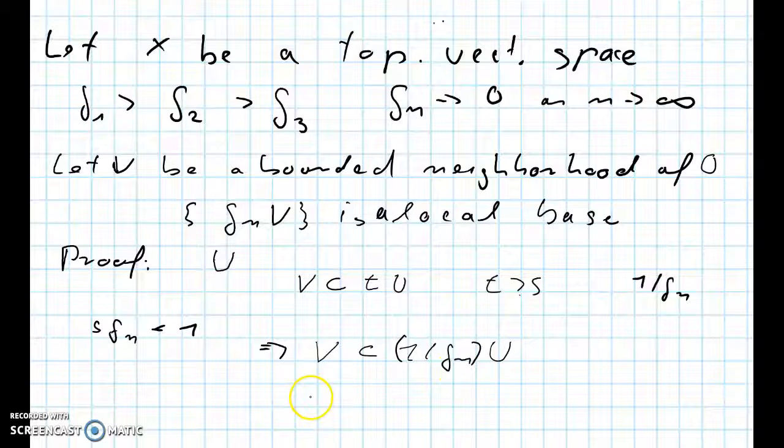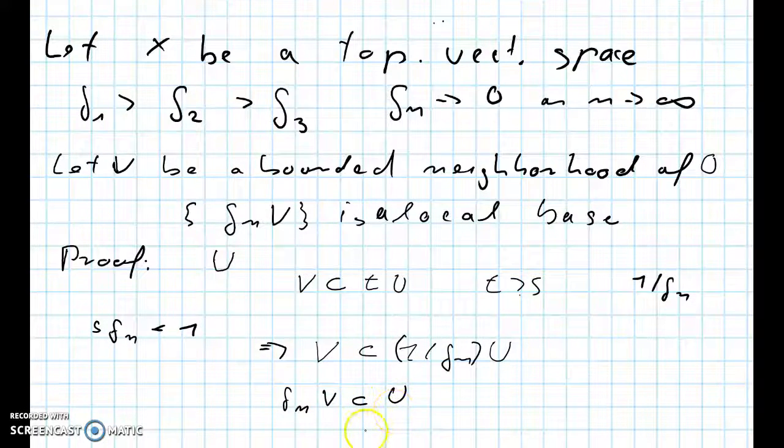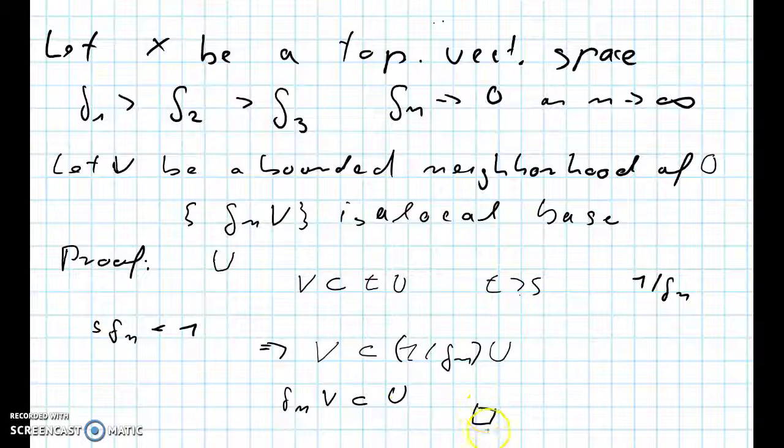And we can rewrite this as ΔnV is inside U. So in fact all but finitely many of these sets ΔnV are inside U, and thus they form a local base. And this concludes the proof of the theorem.